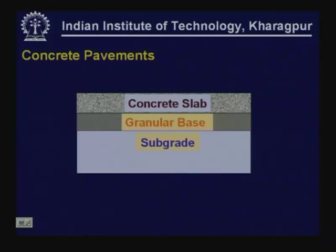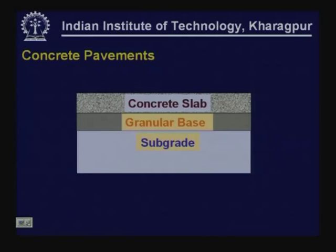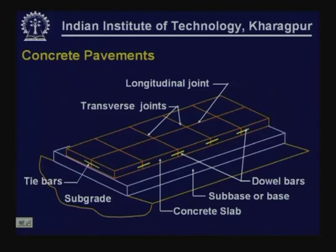This is how a typical concrete pavement would look. It will have subgrade — though shown as finer thickness it will be of infinite thickness. The top portion will be of prepared foundation prepared to proper specification and strength, over which you may have a granular base or sub-base depending on the requirement, and over which you have a concrete slab. This is the general arrangement of a concrete pavement.